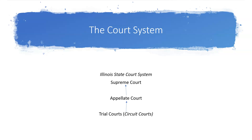Let's talk about our court system. There's a handout that I've asked you to look at, and we'll look at the Illinois state court system. State court systems have the same basic structure as the federal court system — they have trial courts and appellate courts. Many state systems include courts of specialized jurisdictions, such as domestic relations courts or small claims courts.